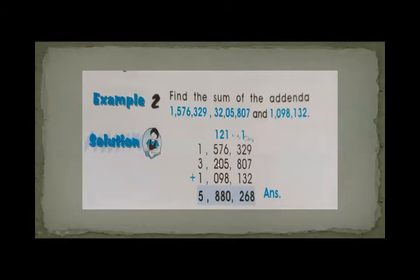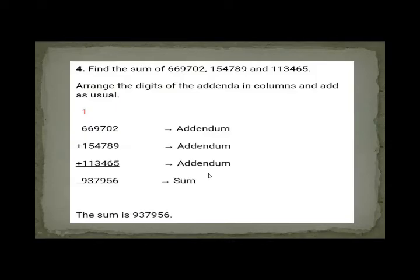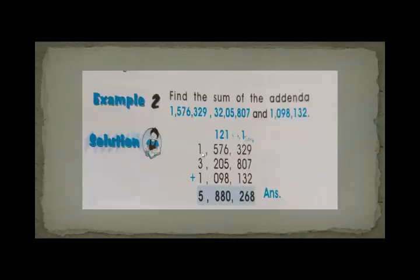5 plus 2 equals 7, plus carry 1 equals 8. Then 3 plus 1 equals 4, plus carry 1 equals 5. So the sum is read as 5,880,268.